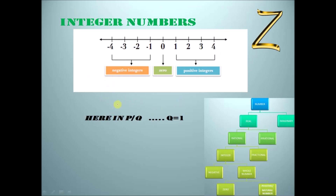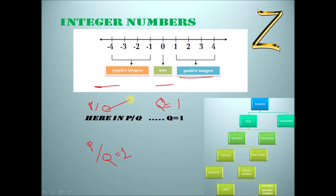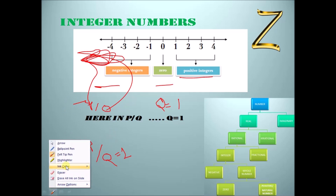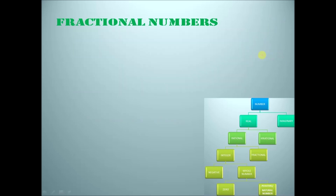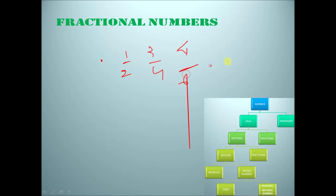Next is integers. Integers are all the numbers with no decimal. These are represented with Z. Now it's a little tough.